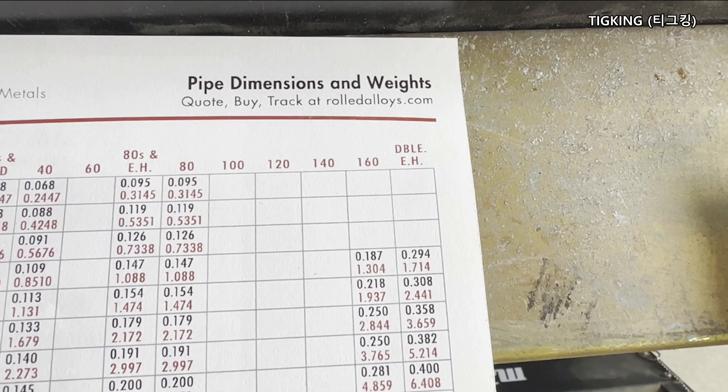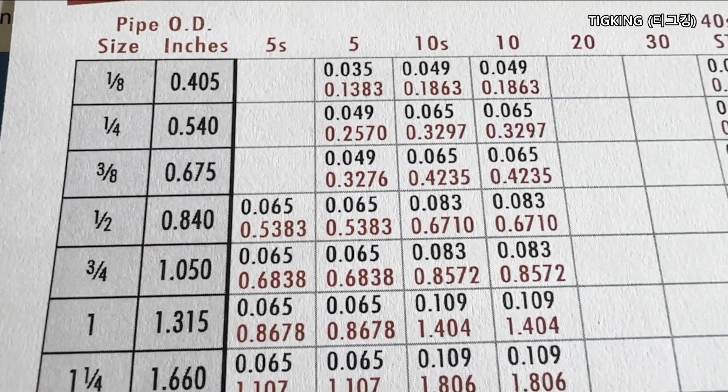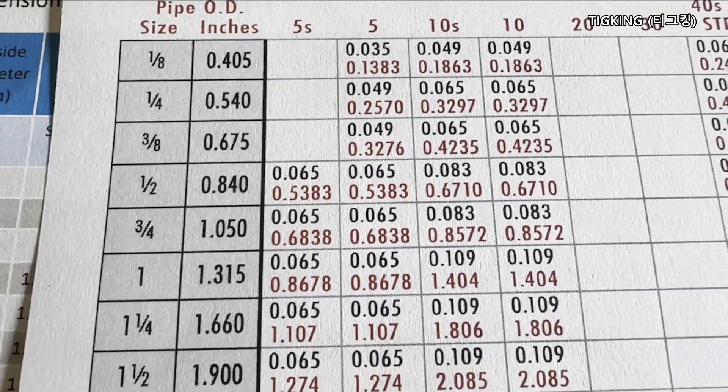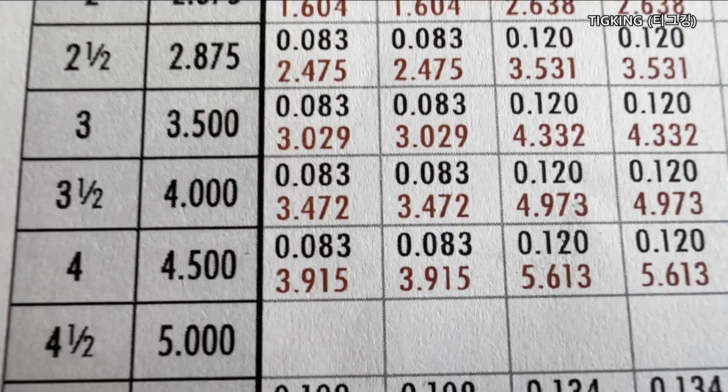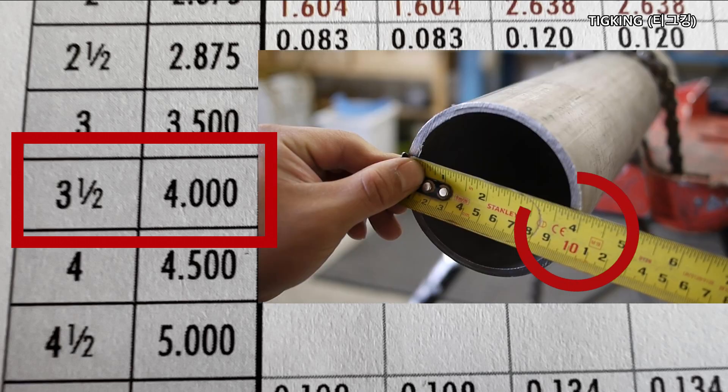I read four inches is the longest measurement. Let's take a look at the pipe dimension chart to double check. First column is pipe size. Second column is pipe outside diameter in inches. As you see, three and a half inch pipe, outside diameter is four inches.